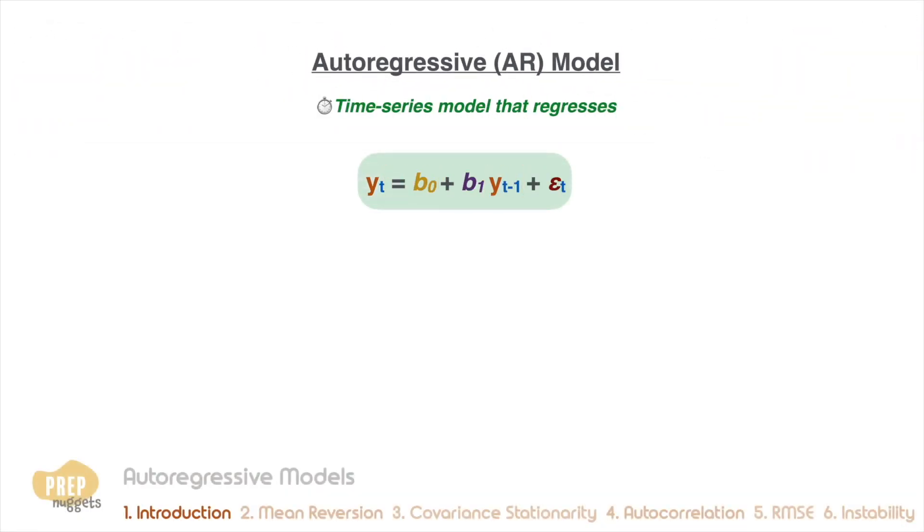An autoregressive model, or AR in short, is a time series model that regresses the dependent variable against one or more lagged values of itself.